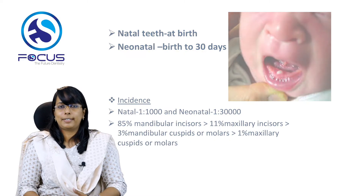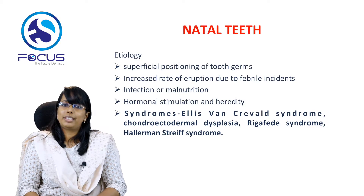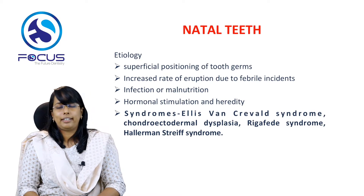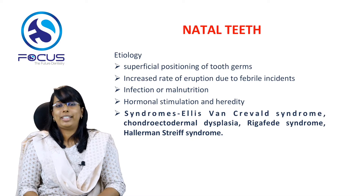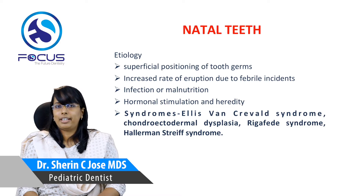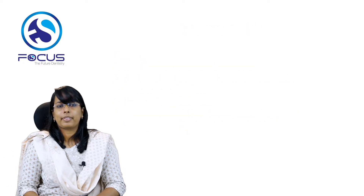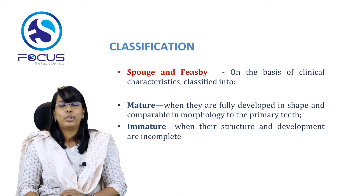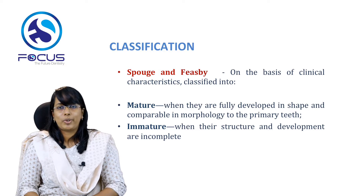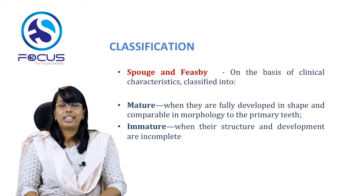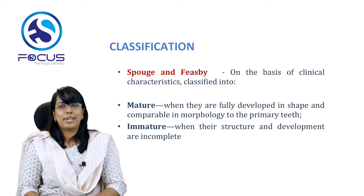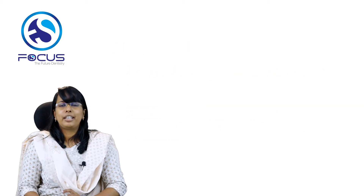The etiology of natal teeth includes superficial positioning of the tooth germ, increased rate of eruption due to febrile episodes, infections, or malnutrition. Natal teeth are also associated with syndromes such as Ellis-van Creveld syndrome, Hallermann-Streiff syndrome, and Riga-Fede syndrome. Natal teeth are broadly classified into mature and immature types by Spouge and Feasby. Mature neonatal teeth are fully developed in shape and comparable in morphology to a primary tooth; immature teeth have incomplete structures and development.